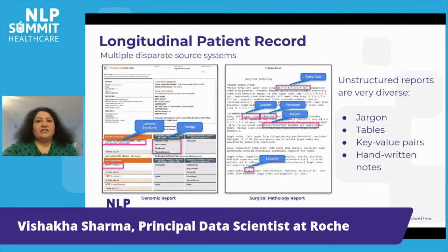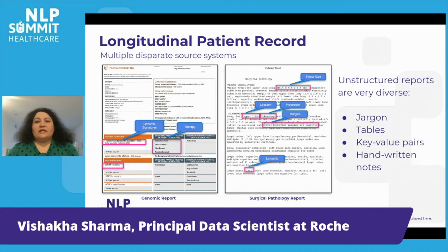One of the major challenges in healthcare is to consolidate unstructured data, like genomic signatures, therapeutic information, and data fields present in pathology reports such as tumor size, location of the tumor, and what procedure was performed for that patient. These are some sample reports like genomic and surgical pathology reports. These reports are very diverse — some of them have jargons, tables, key-value pairs, and handwritten notes.